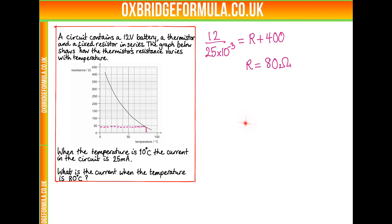So then the current will be V divided by R. So 12 divided by 40 plus 80, which is 120. So 12 divided by 120 is 0.1 amps. But the question gave the answers in milliamps, so we need to be able to convert this quite easily. So this is 100 milliamps for the current when the temperature is 80 degrees.